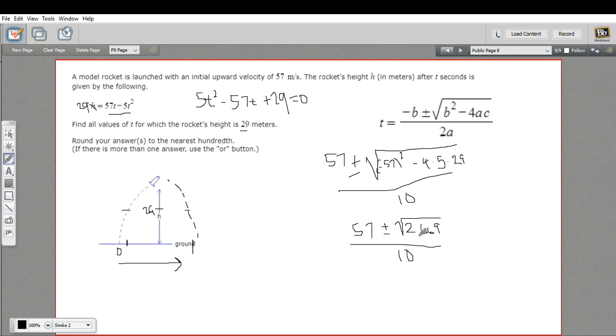And rather than trying to simplify the square root or factor this or whatever, I'm just going to crunch this out on the calculator. So I'm going to take the square root of 2,669, and I get 51.66 something. So this is 57 plus or minus 51.6623. We'll go to 4 digits.